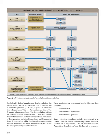The first three volumes containing 75 active regulations address the Federal Aviation Administration. The fourth volume deals with the Office of the Secretary of the Department of Transportation, Aviation Proceedings, and Commercial Space Transportation, while the fifth volume addresses NASA and Air Transportation System Stabilization. These regulations can be separated into three categories: Administrative, Airworthiness Certification, and Airworthiness Operation. Since 1958, these rules have typically been referred to as FARs, short for Federal Aviation Regulations.